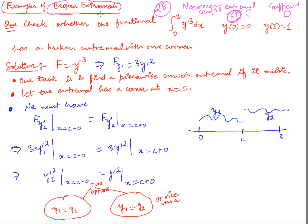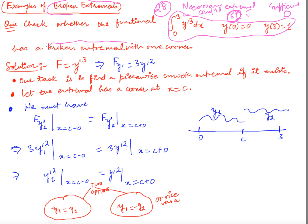In the last lecture we saw how to deal with broken extremals and obtained the Weierstrass conditions for finding them. In this video we will look at some examples. The first problem asks us to check whether a particular functional with given boundary conditions has a broken extremal with one corner.